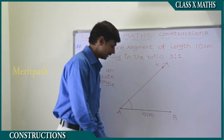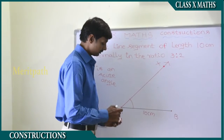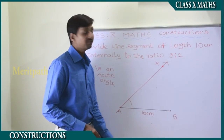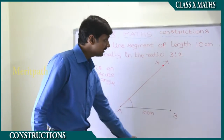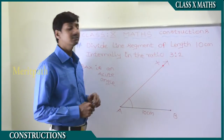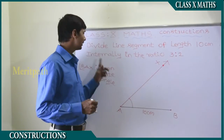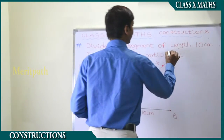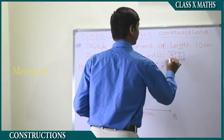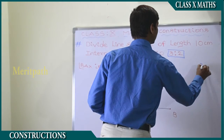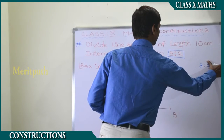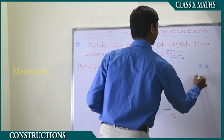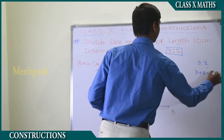Let's divide AX into 5 parts. The reason is we need to divide the line segment internally in the ratio of 3 to 2, and 3 plus 2 equals 5 parts.